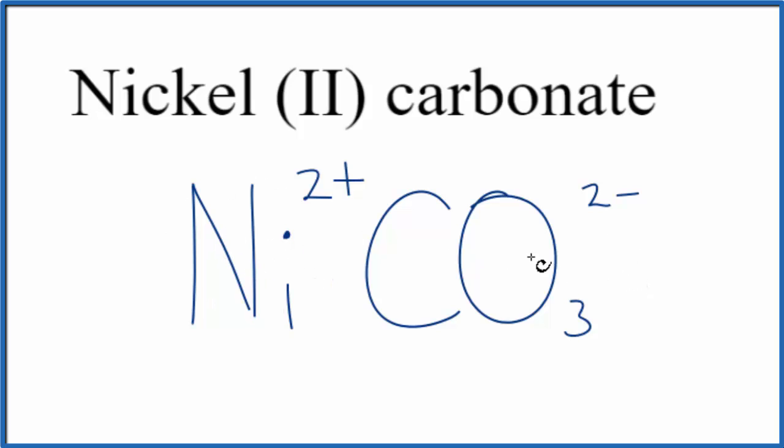So because we have this metal here bonded to a polyatomic ion, we have these two ions. This is an ionic compound. Both of these charges need to add up to zero, have a net charge of zero. 2+, 2-, that adds up to zero. So this is the formula for nickel two carbonate, NiCO3.